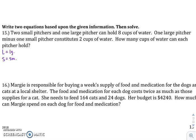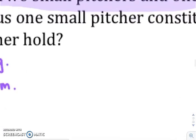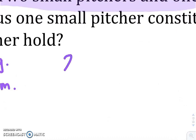So the first sentence is your first equation. It says two small pitchers and one large pitcher can hold eight cups of water. So two small and, or plus, one large pitcher has a total or can hold a total of eight cups.